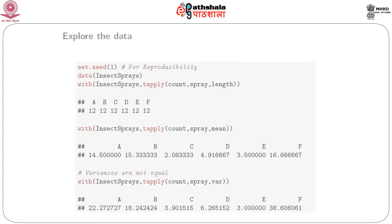The question is: how can we get a sampling distribution that does apply? For this data, we would be using the insect spray dataset. The insect spray dataset contains data about the number of insects found under different types of spray. You can use '?InsectSprays' in R to know more about the dataset.